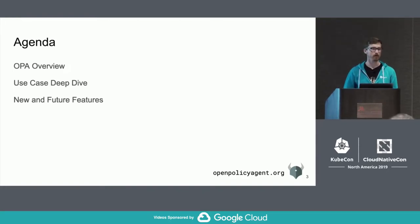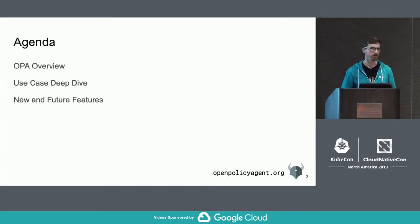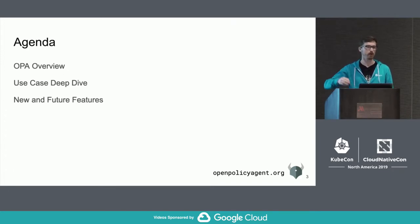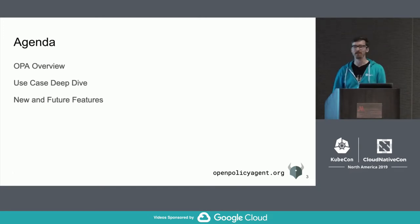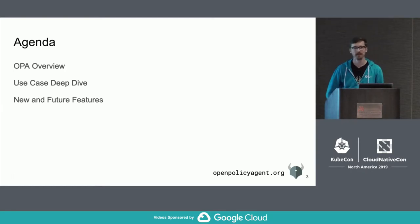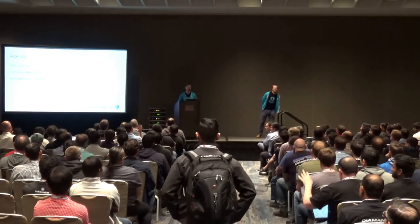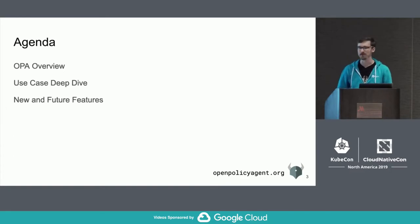What we thought we'd do today is talk a little bit about OPA, give an overview for people that might have heard about it for the first time at this conference. Then we'll do a use case deep dive with some live coding, and talk about some new features we've been working on. How many people here have heard about OPA for the first time at this conference? Okay, pretty good number. How many have tried it out? And how many are running it in production? Okay, a few. I think this is going to be a useful session for everybody.